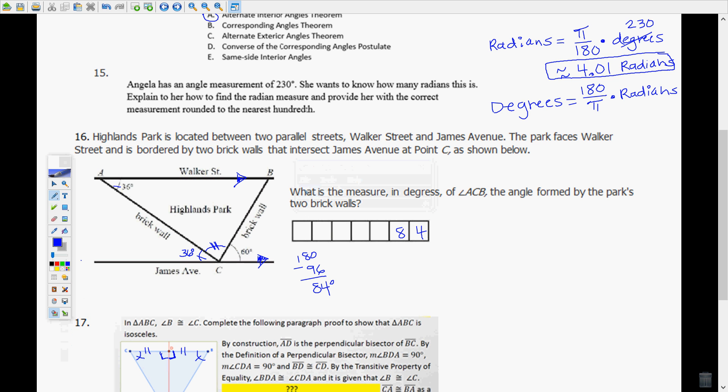Highlands Park is located between two parallel streets, Walker Street and James Avenue. The park faces Walker Street and is bordered by two brick walls that intersect James Avenue at point C as shown below. So we have the two parallel streets. I marked them as parallel with my triangles, and that will help us later on as we talk about this problem.